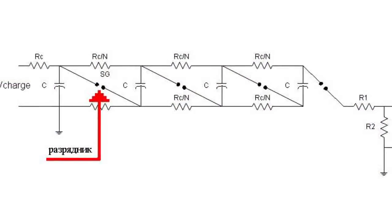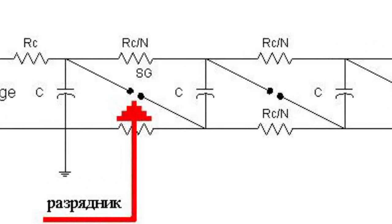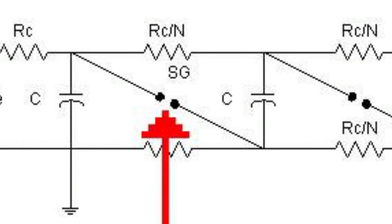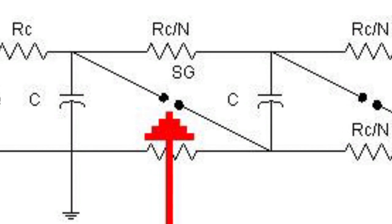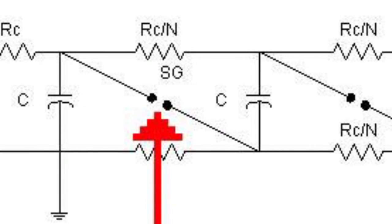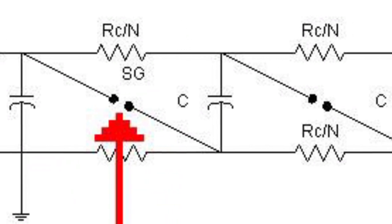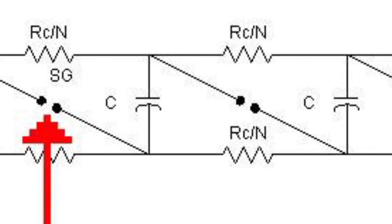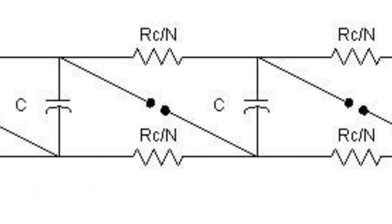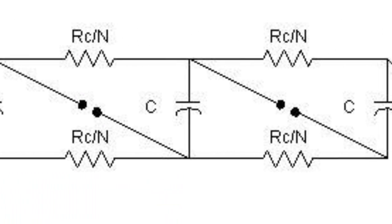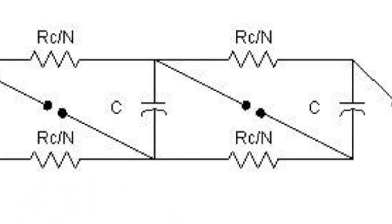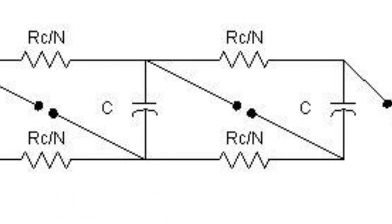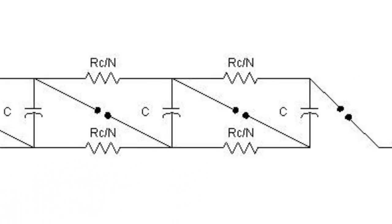When the capacitors are charged, the generator is launched after the first discharger goes off. Overvoltage at different discharges forces all the dischargers to be actuated almost simultaneously, which triggers the series connection of the charged capacitors.